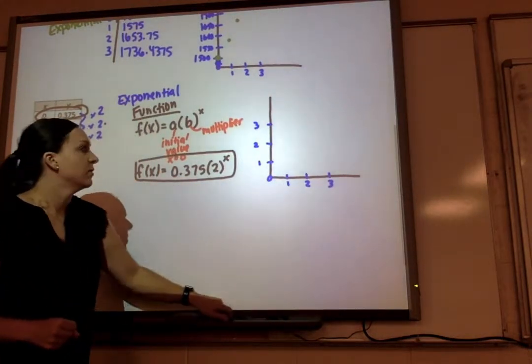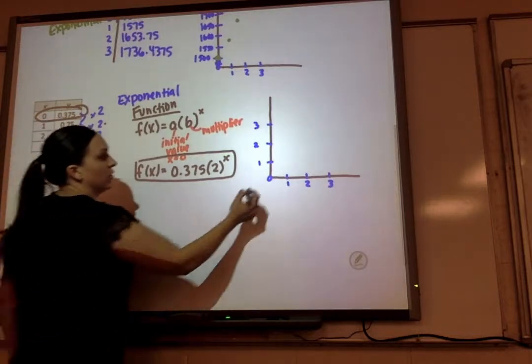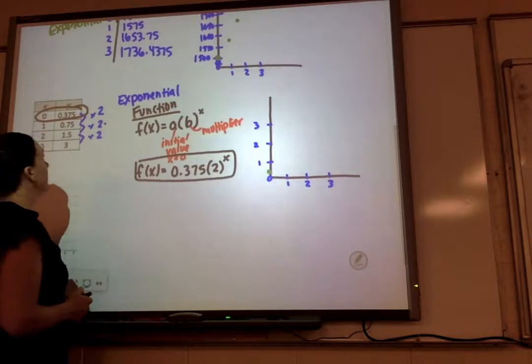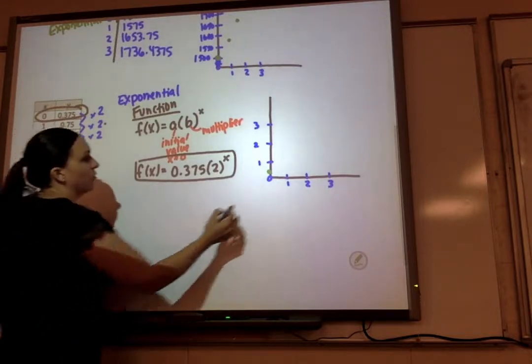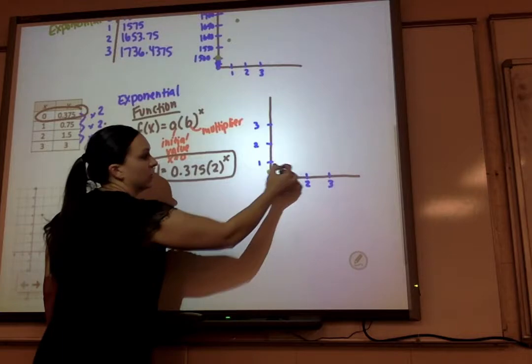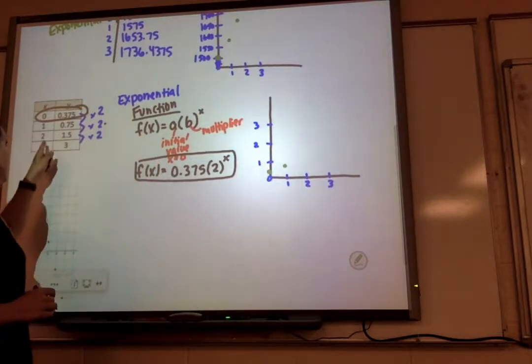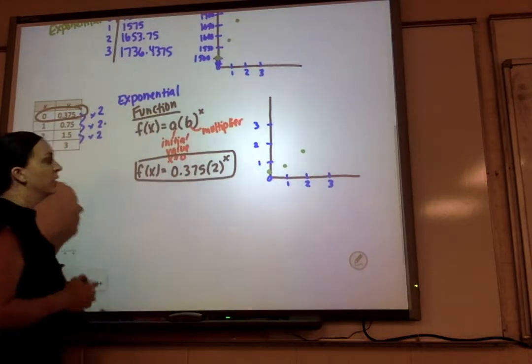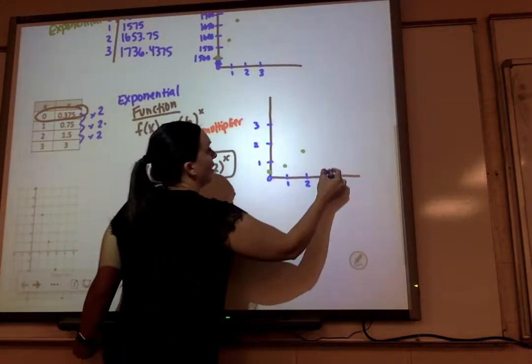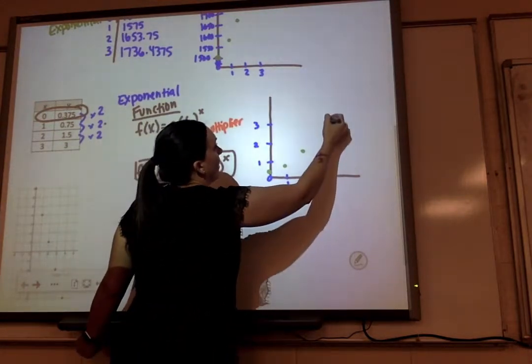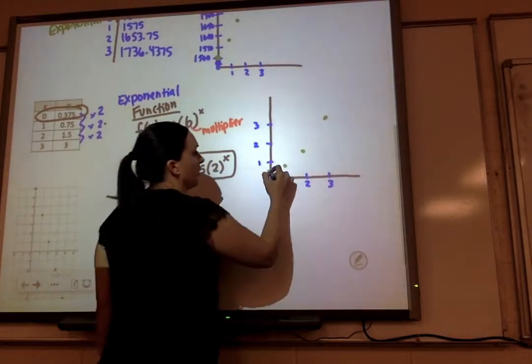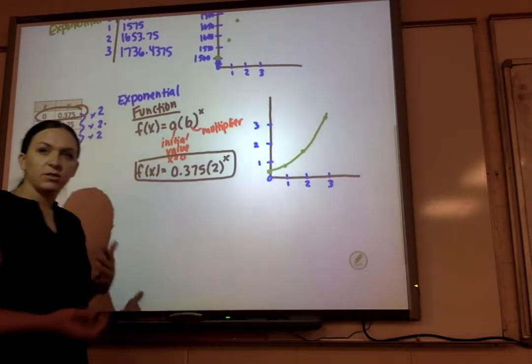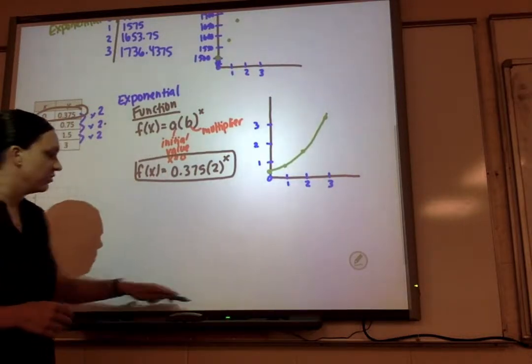1, 2, 3. 1, 2, 3. We're going to plot our points. 0 to 0.3, we're right there on the axis in the middle. Over 1, up 0.75, so not quite to 1 yet. Over 2, up 1.5. And then over 3, up 3. And I can tell this is exponential because my graph is starting to curve. That's what we see when we have an exponential function.